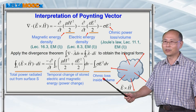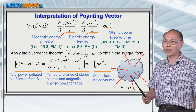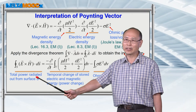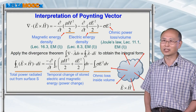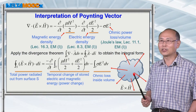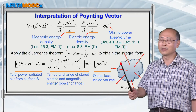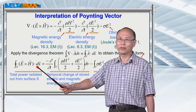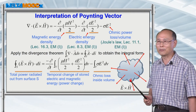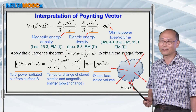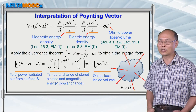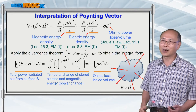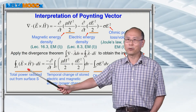One part of the right-hand side is related to Ohmic loss inside the volume. By energy conservation, the uncompensated part equals the radiation power going out from the volume. Therefore, E cross H integrated over the enclosed surface physically represents the total power radiating out of that volume. For example, this volume could represent a piece of antenna, and integrating over its surface gives the total radiated power.